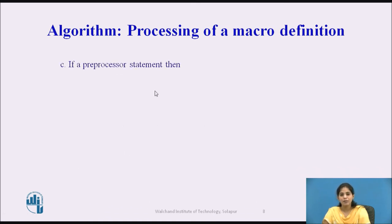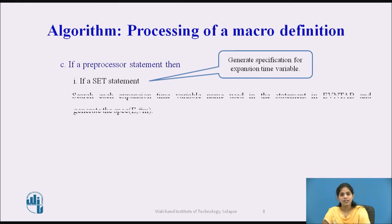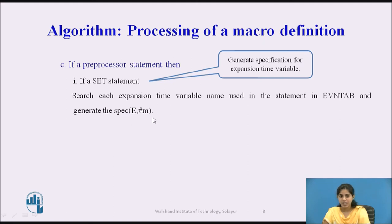We check if there is a preprocessor statement. If there is a SET statement, we search for each expansion time variable name used in the statement in the EVN tab and generate the specification E, hash M — where E indicates an expansion time variable and hash M indicates the entry number of that variable in the EVN tab.